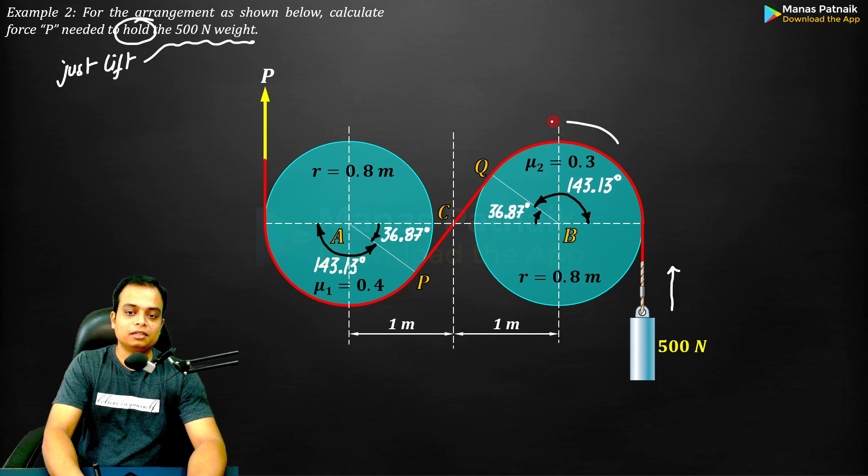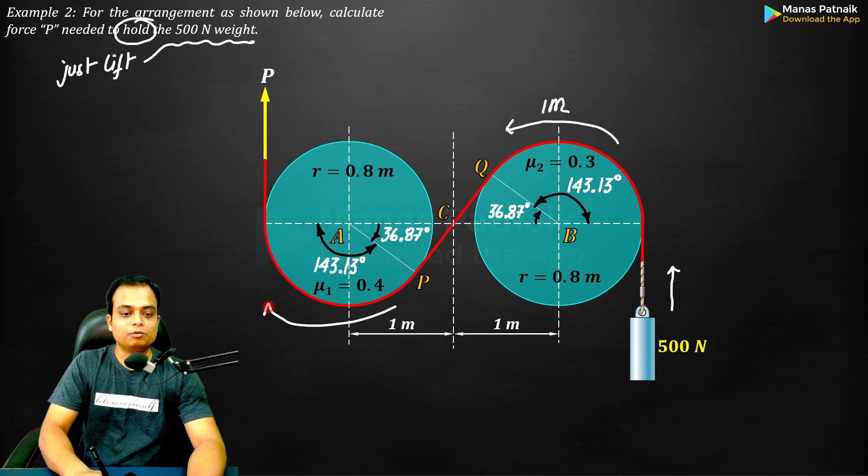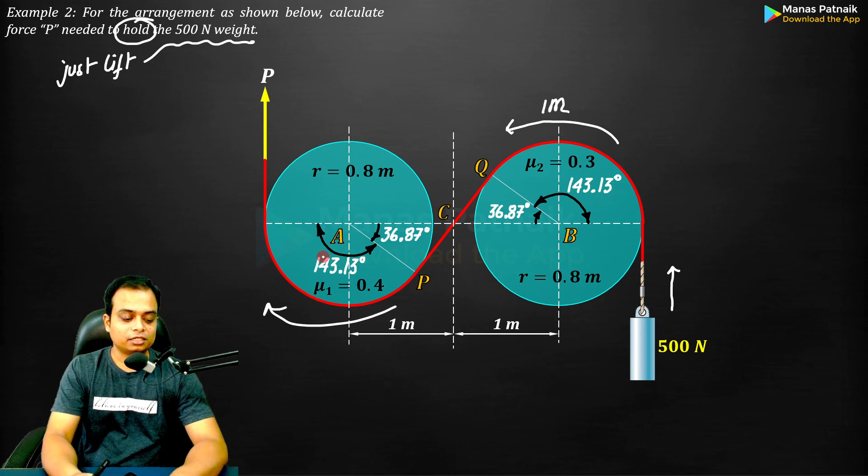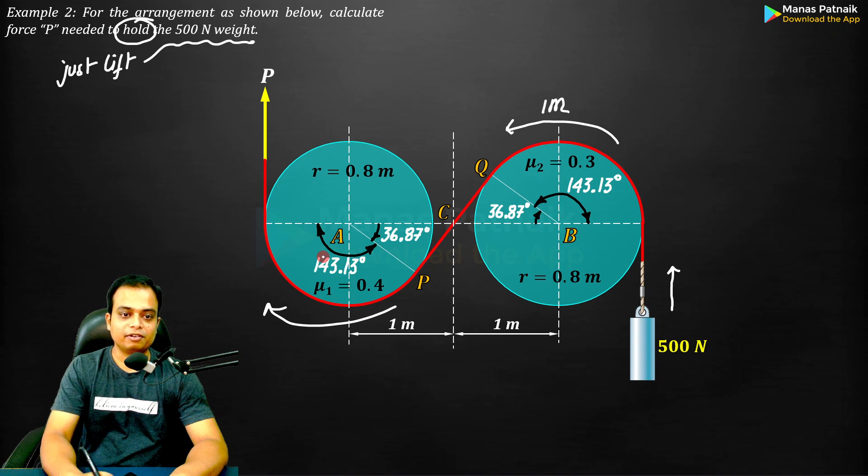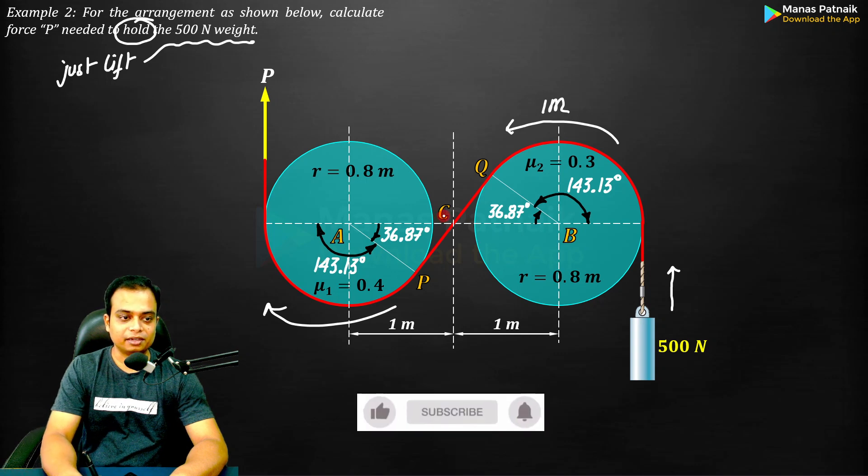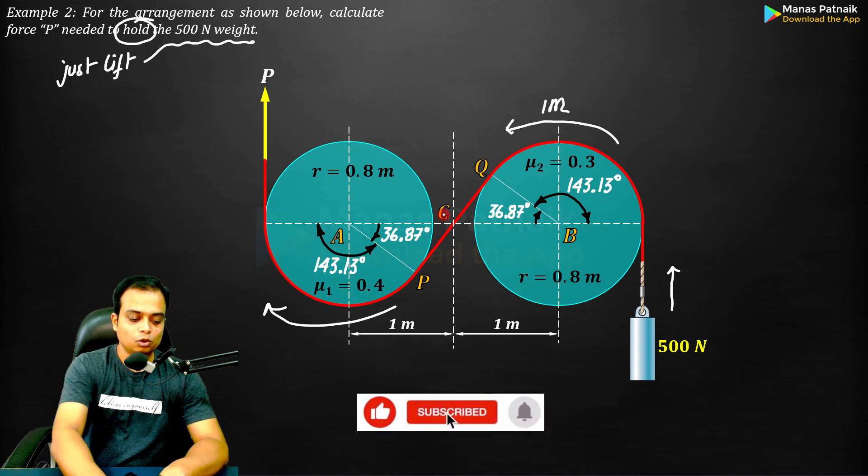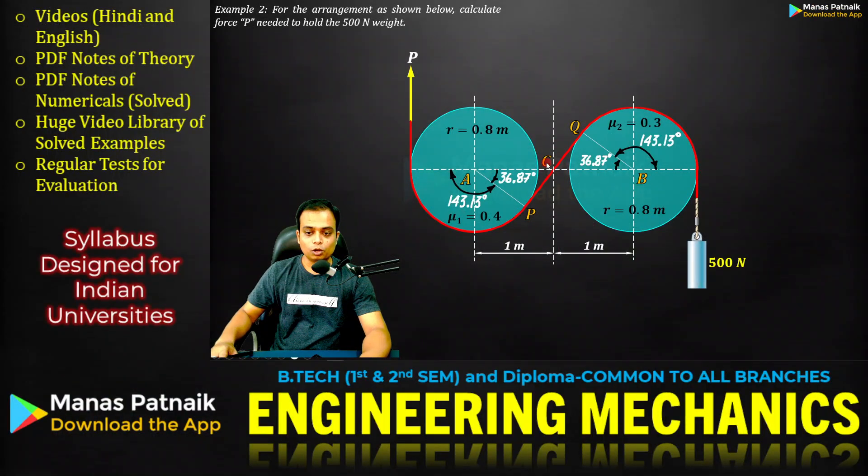This would have been the impending motion, this would have been the impending motion. Please let me know what is the answer in the comments - it will be a larger value, let me tell you very frankly. Anyways, going ahead with the problem, let's start with the free body here.